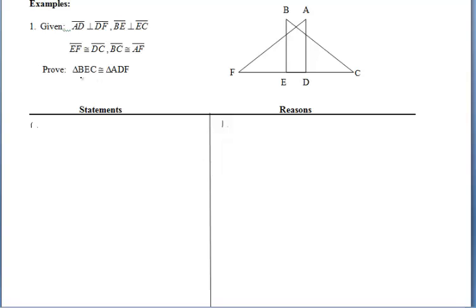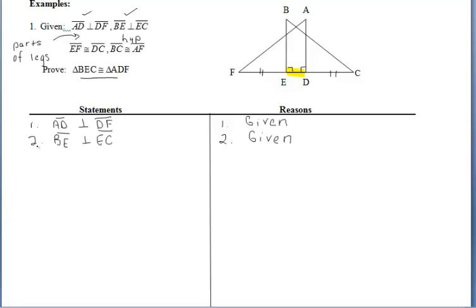Taking a look at the next example, we want to prove those two overlapping triangles congruent using the given information above. Let's fill in some tick marks. From the perpendicular segments we get right angles. They tell us that segments EF and DC are congruent — those are not full sides of the triangle, but parts of the sides. They also tell us that BC and AF are congruent, which are the hypotenuses of the right triangles, so we already have the H for HL. We also have parts of the legs, and we can use the addition property to get the full legs congruent.